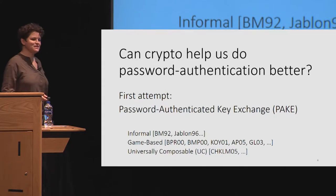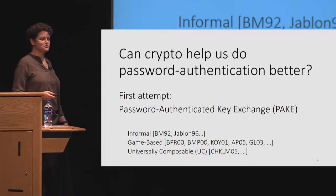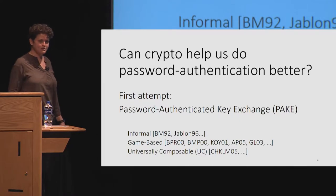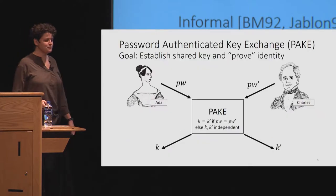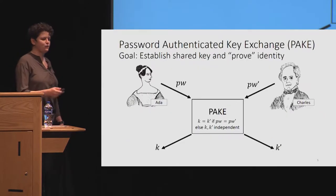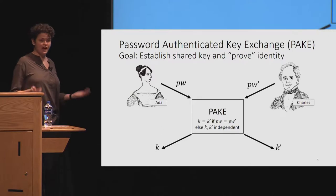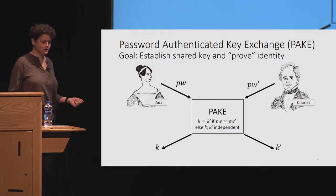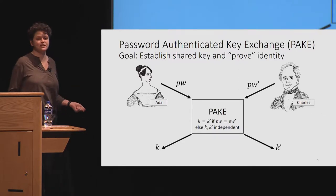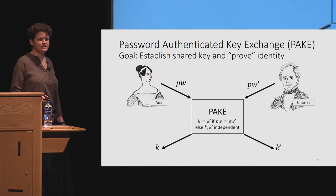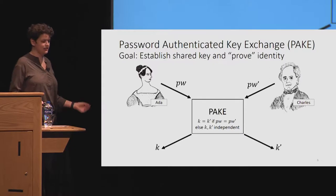Our first attempt is going to be to use password-authenticated key exchange, which is a well-established primitive. It's been studied in the game-based, simulation-based models, as well as the universally composable model. Ada and Charles each have a password, they insert it into a PAKE protocol, and then they get the same key if their passwords match, otherwise they get an independently random key. You can think of this as a secure computation of a password equality function with the addition of getting keys.